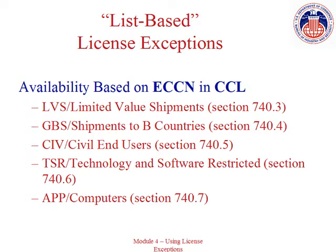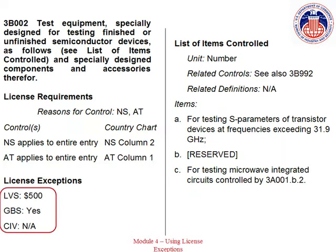Let's look at an example of an entry on the Commerce Control List. In this example of ECCN 3B002, there are three list-based license exceptions listed. License exception LVS may be available with an identified dollar value limit of $500. License exception GBS may be available, and license exception CIV is not available as indicated by NA, not applicable. Keep in mind that even though the ECCN indicates that license exceptions LVS and GBS may be available, you still need to review the specific license exception criteria in Part 740 to see if your transaction qualifies. The ECCN is only the starting place in determining eligibility.